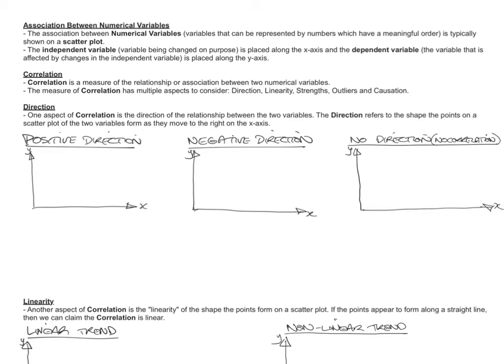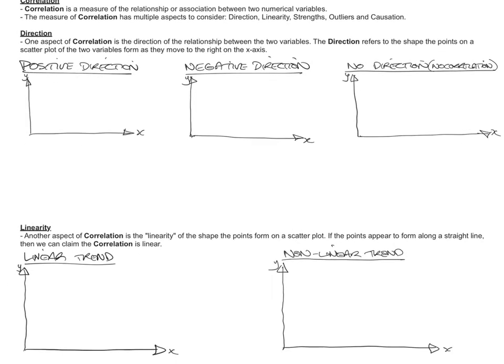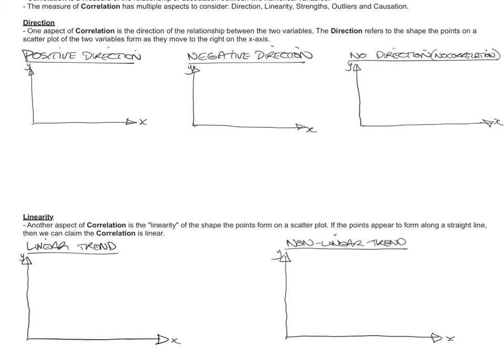So direction. One aspect of correlation is the direction of the relationship between the two variables. The direction refers to the shape the points on the scatter plot of the two variables form as they move to the right on the x-axis. So it's all in relation to when you're looking, going from left to right, whether they're going up or down. If I was to show you a relationship in a positive direction, well, the points on the scatter plot would be formed like this. So if I was to do like a line that was sort of fitting with this trend of the points here, it would go up like this. And so you can see as points move to right, points move up. And that's a positive direction for a correlation.